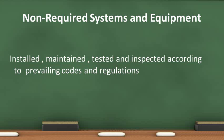Non-required systems are fire alarm systems not required by code to be installed. The building owner has chosen to install a fire alarm system for added protection for employees, or an insurance carrier has required it. The fire code requires that non-required fire alarm systems must meet all the requirements of NFPA 72 and California Fire Code Chapter 9.